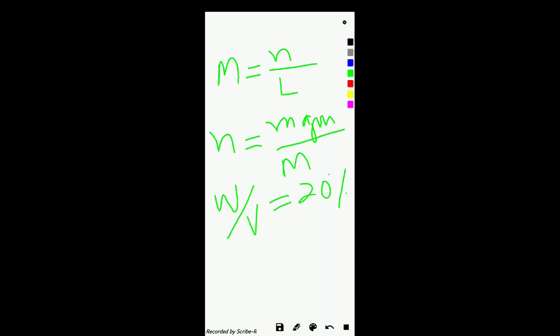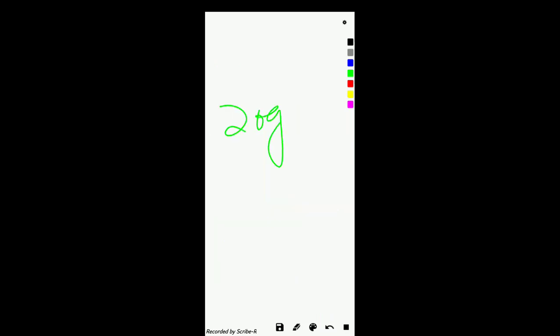In 1000 ml, it will be 20 grams divided by 100 ml multiplied by 1000 ml. By doing this calculation, we will get 20 grams multiplied by 10, which equals 200 grams mass of NaOH.